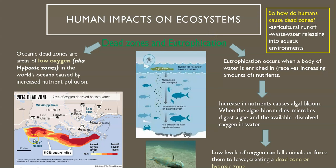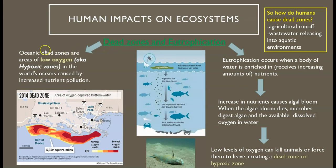The next thing we're going to talk about is dead zones and eutrophication. Dead zones are areas of low oxygen, otherwise known as hypoxic zones — hypoxic just means little to no oxygen. They occur in the oceans due to increased nutrient pollution; more nutrients being added to the water creates this problem. There's a massive dead zone right in the Gulf of Mexico along Louisiana's coast, and as you can see from all this dark red, there's very little oxygen in that water.